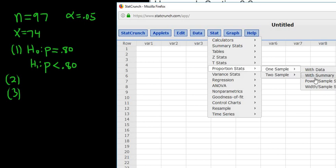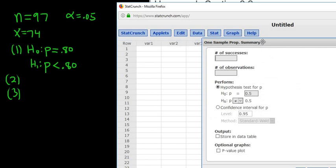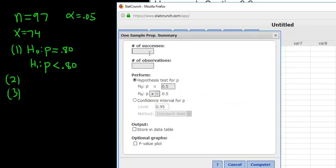Stat, proportion stats, one sample with summary. Let's see our successes, that's 74. Our observations is 97. This is a hypothesis test, so here we have to enter our p, so .80, and then this is less than .80, so .80, everything looks okay. So 74 successes, observations is 97. Everything matches what we have written down. Click compute.